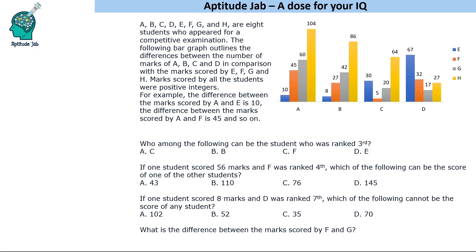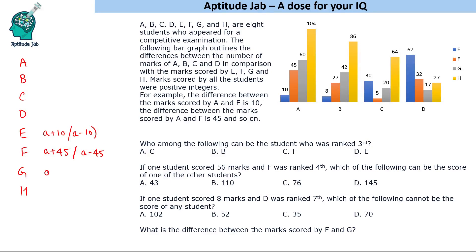There are eight people: A, B, C, D, E, F, G, H. A and E have a difference of 10, so E can be either A+10 or A−10. F has a difference of 45, so F is A+45 or A−45. Similarly, G can be A+60 or A−60, and H can be A+104 or A−104. Since we are given differences without specifying which is larger, these are the possible scores for E, F, G, and H.